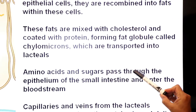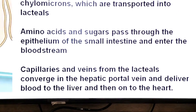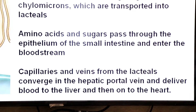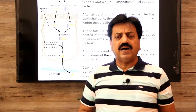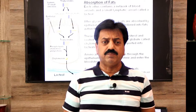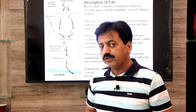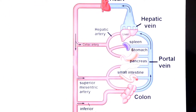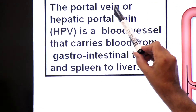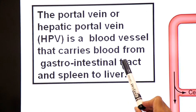Amino acids and sugars pass through the epithelium of the small intestine and enter into the bloodstream via capillaries and veins. The veins from the lacteals converge in the hepatic portal vein and deliver blood to the liver and then on to the heart. The hepatic portal vein is a blood vessel that carries blood from the gastrointestinal tract and spleen to the liver.